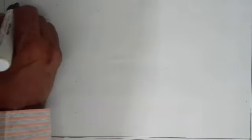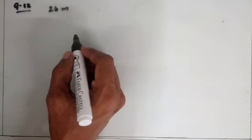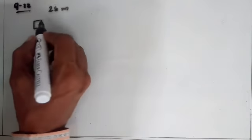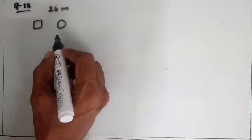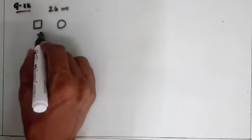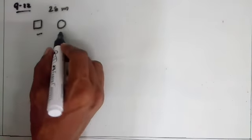Friends, now here we discuss the remaining questions of Exercise 6.5. Question number 22: A wire of length 28 meters is to be cut into 2 pieces. One piece is to be made into a square and the other into a circle. What should be the lengths of the two pieces so that the combined area of the square and circle is minimum?